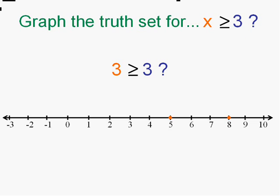Now is 3 bigger than or equal to 3? It is equal, so we shade it. What about the numbers in between? 6 and a half. Well 6 and a half is bigger than or equal to 3, isn't it? So all the numbers in between all those numbers are going to be true also.